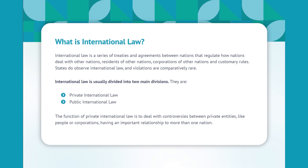They are private international law and public international law. The function of private international law is to deal with controversies between private entities, like people or corporations, having an important relationship to more than one nation.